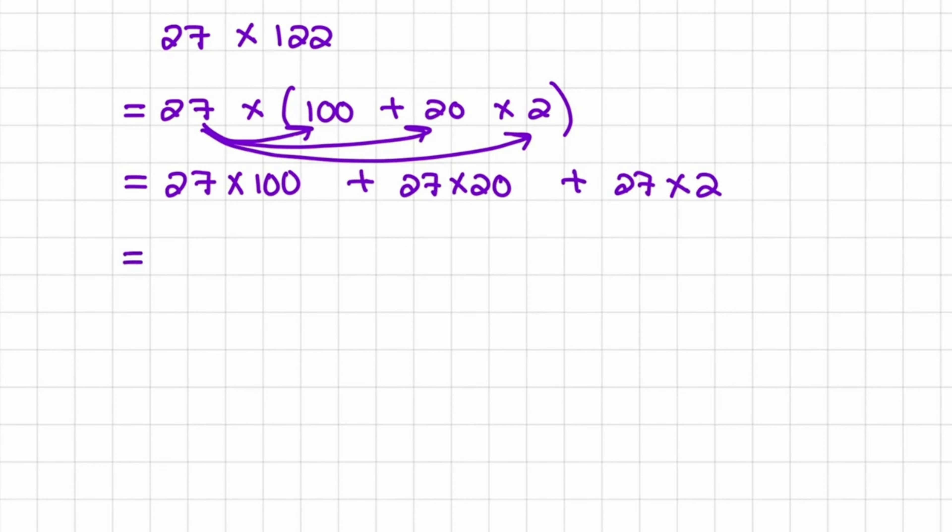And this is simple calculations. So 27 multiplied with 100 is 2700. 27 multiplied with 20 is 540, which is 27 times 2 equals 54, then we add the 0. And then 27 multiplied with 2 is 54.